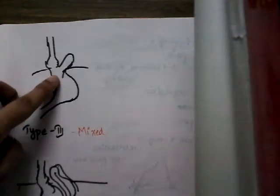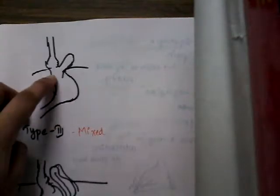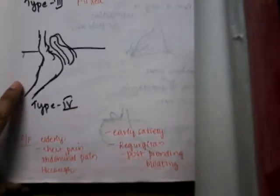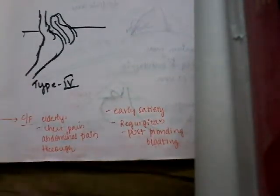Type 3 is the mixed type of hiatus hernia, where there is displacement of both the gastroesophageal junction and the fundus into the thorax. Type 4 involves herniation of hollow viscera other than the stomach, such as the intestine or colon, into the thorax.